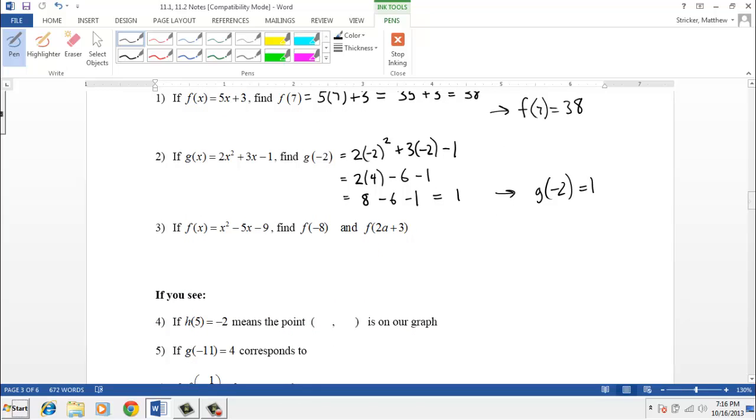So again, we could do something like finding f of negative 8. I'm actually going to skip that one, and I'm going to do f of 2a plus 3. What if our input is more than just a number? The last two we had numbers here. We had a 7, and we had a negative 2. Does it change the process if this is more than just a number, or do we still just plug it in? And the answer is that we still just plug everything in, and of course when we plug in we put parentheses.